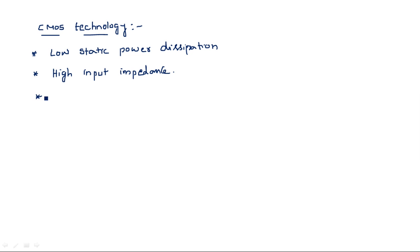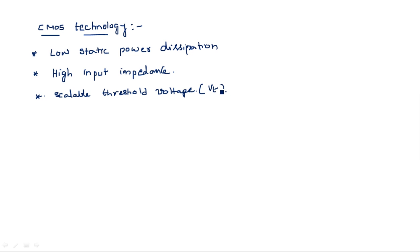Another important feature of CMOS is scalable threshold voltage. The threshold voltage Vt is the minimum voltage required to switch on the transistor. In CMOS, we have the ability to change or adjust this threshold voltage.